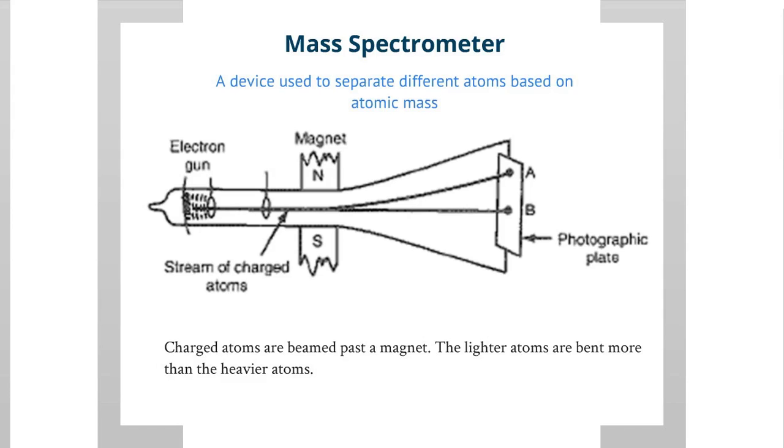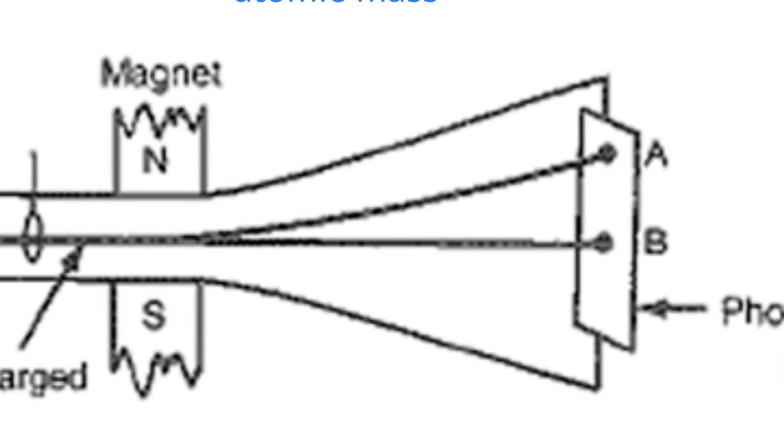The lighter atoms are bent more than the heavier atoms. So here we have the charged particles going past the magnet, and the magnet is going to attract substance A more than substance B. So that must mean that substance A is lighter than substance B because it's easier to bend its trajectory. Well, A turned out to be chlorine-35, while B turned out to be chlorine-37. This shows that chlorine-35 has less mass than chlorine-37.